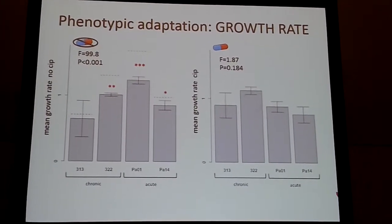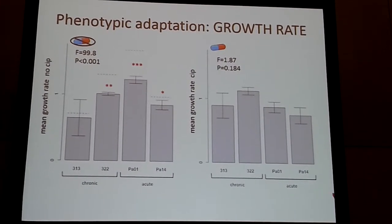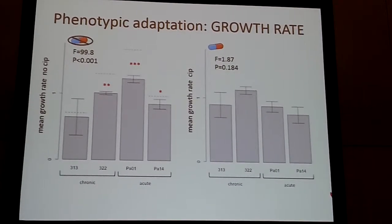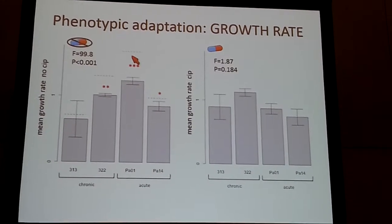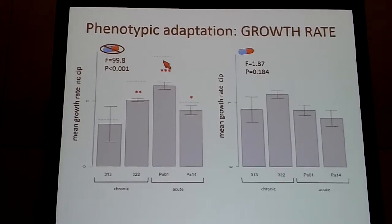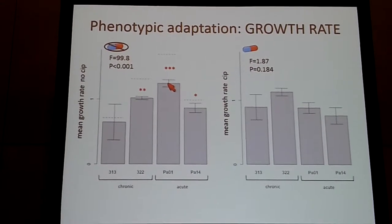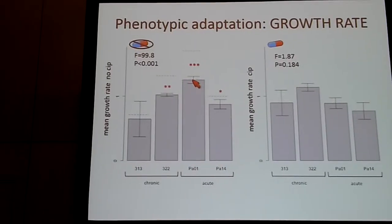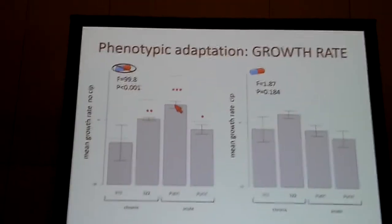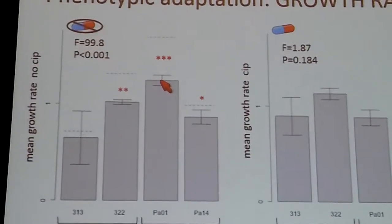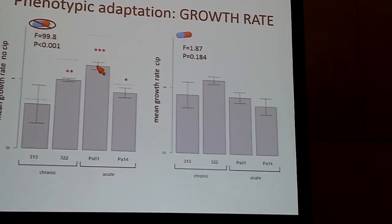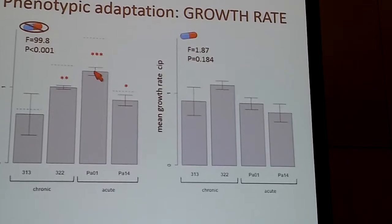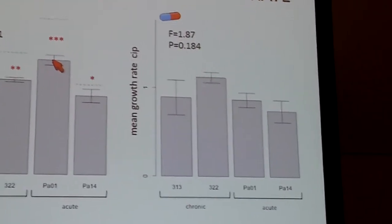I was also interested in quantifying how much better they grew in the lab, so I quantified their maximum growth rate. On the left is growth rate in the absence of drug; on the right is in the presence of drug. In the absence of drug, the dashed lines represent the fitness of the ancestor — and in all cases there's a significant decrease, corresponding to a cost of resistance, which is quite common. Whatever resistance mechanisms arise incur some cost when they're not needed. On the right, in the selective medium with ciprofloxacin, there are no significant differences in growth rate between populations — they all grow equally well.